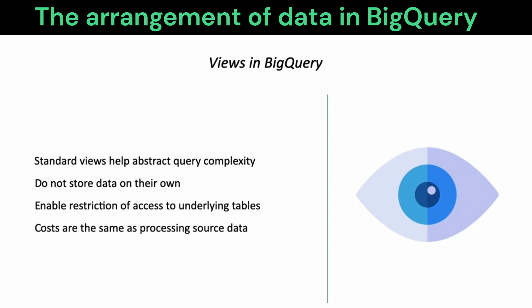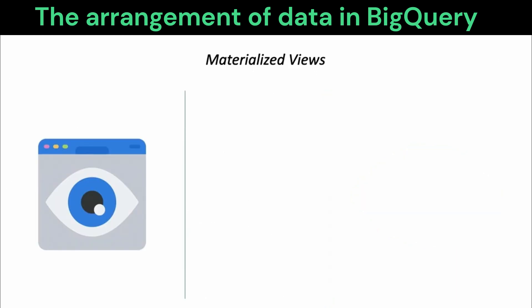Given that views do not store any data on their own, the cost of running queries against views is the same as querying the underlying data. What is a little different from a standard BigQuery view is a materialized view, which is also defined as a query against underlying data. However, the data returned by the query execution is cached.